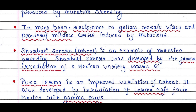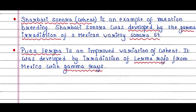In mungbean, resistance to yellow mosaic virus and powdery mildew were induced by mutations. Powdery mildew is a fungal disease that affects a wide range of plants. Sharbati Sonora is a wheat variety developed by gamma irradiation of the Mexican variety Sonora 64. Pusa Lerma is an improved variation of wheat developed by irradiation of Lerma Rojo from Mexico with gamma rays.